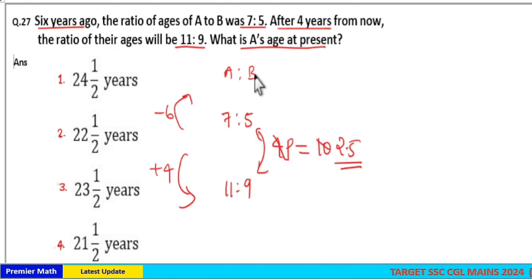Then we have to find out A's present age. Here, after 4 years from now, age is equal to 11 into 2.5. That is 11 into 2, 22, plus 5.5 is 27.5. So this is after 4 years.